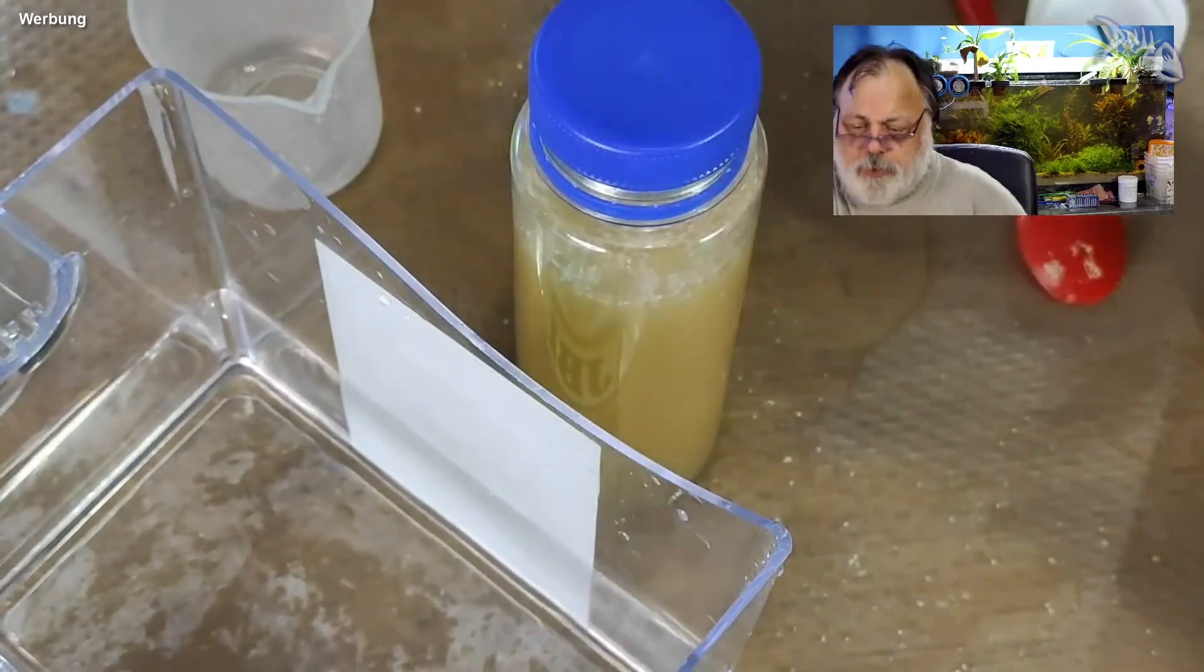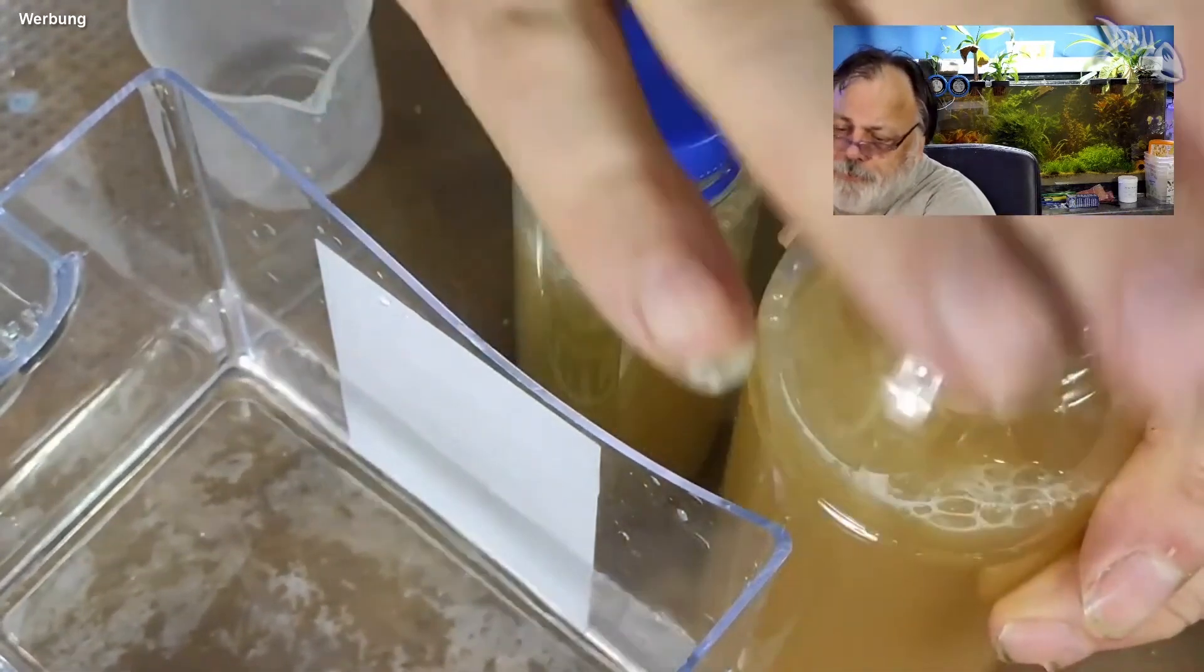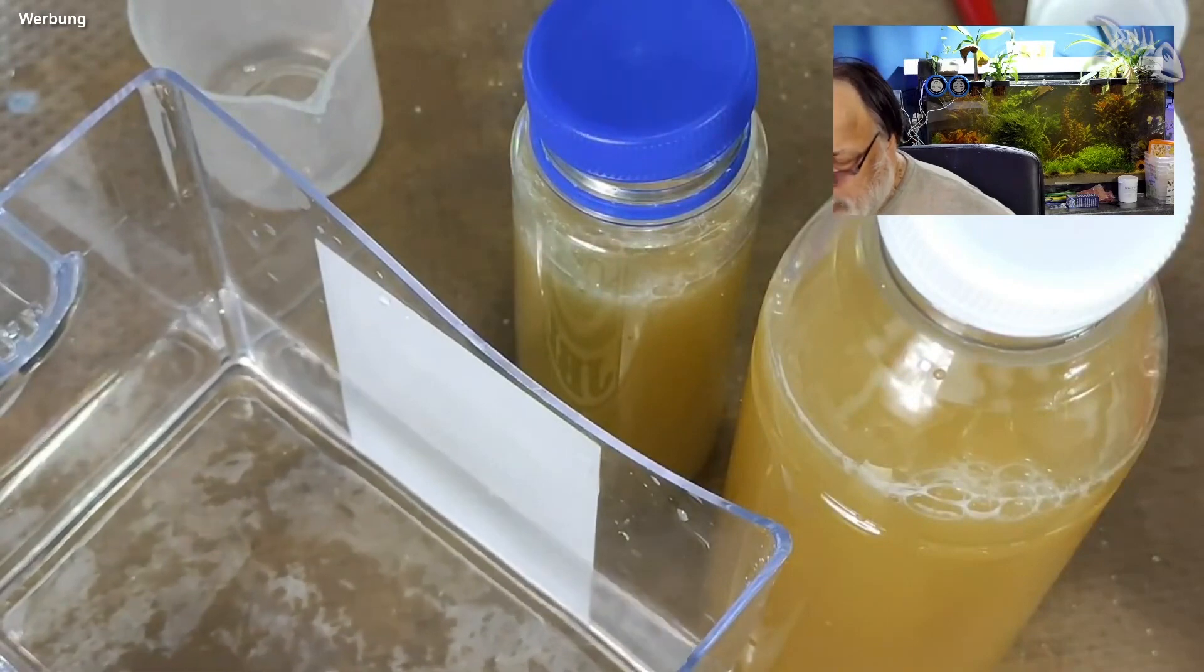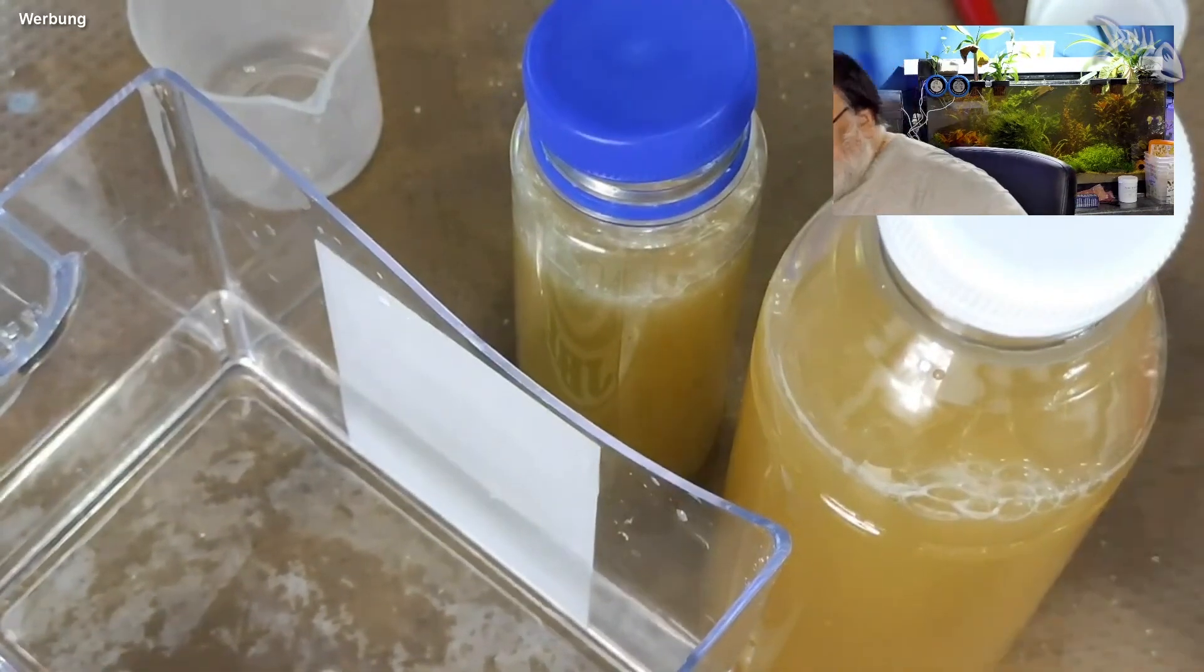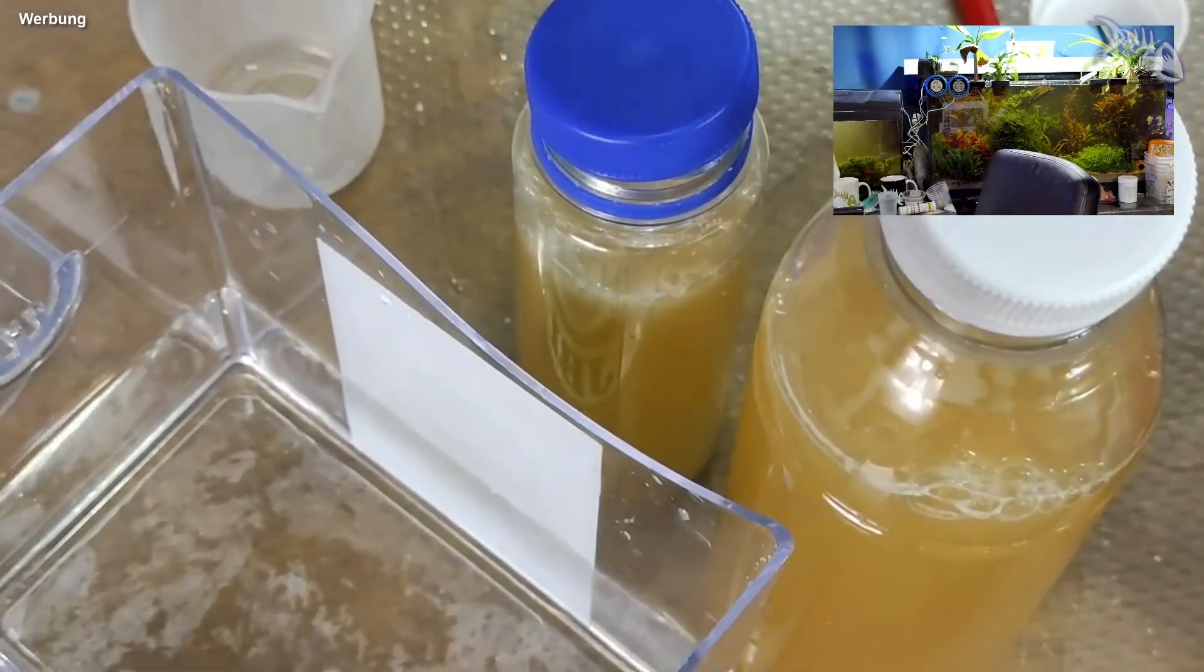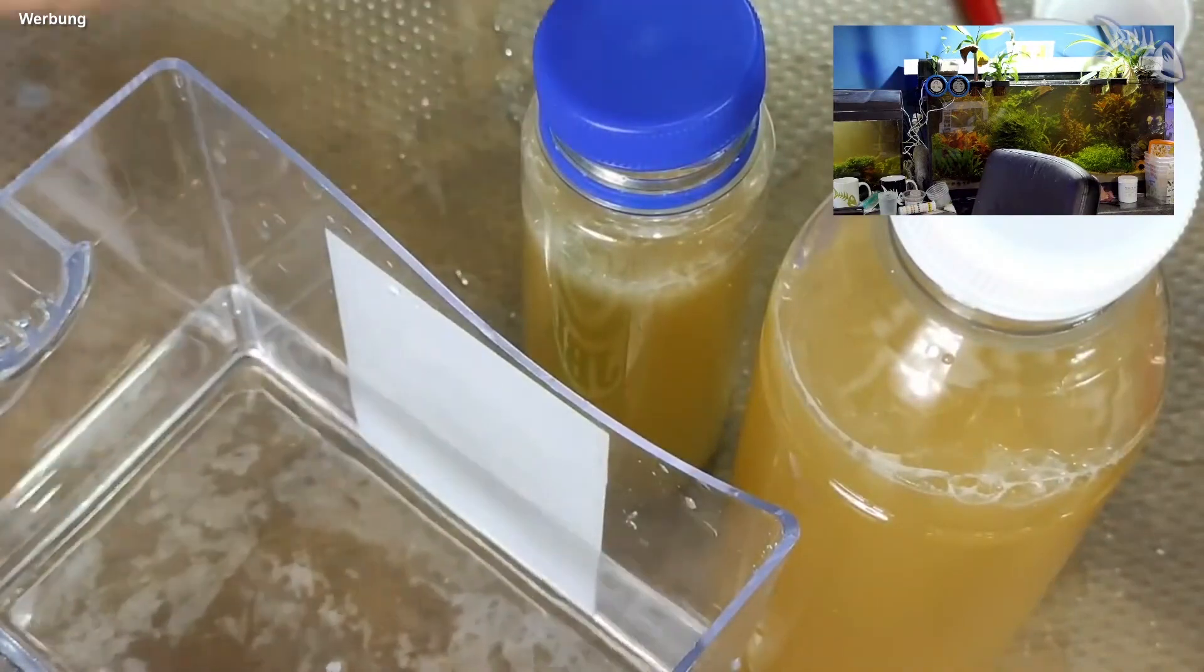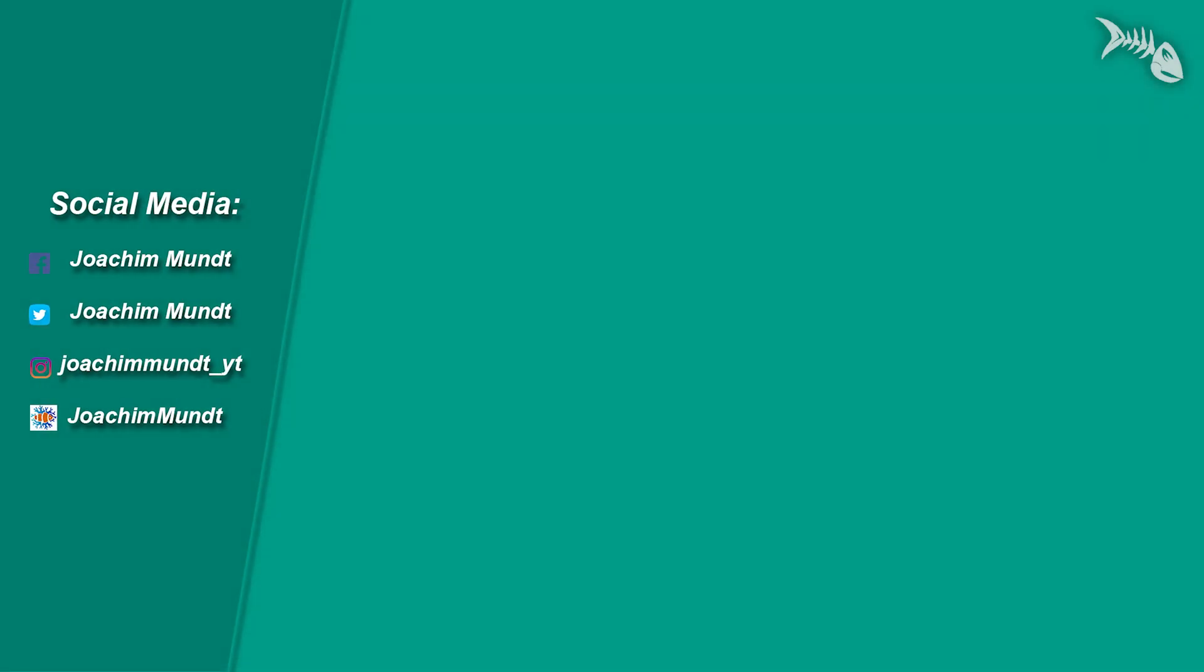Das müssen wir jetzt natürlich noch bei unserer zweiten Flasche machen. Nur locker auflegen. Jetzt kommen die beiden Flaschen in die Ecke, wo die Salinkrebsen stehen.